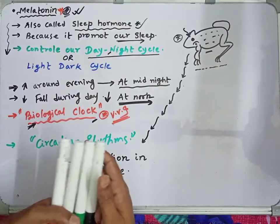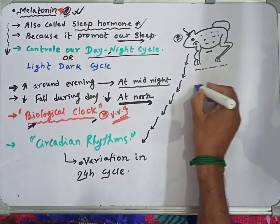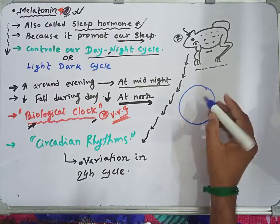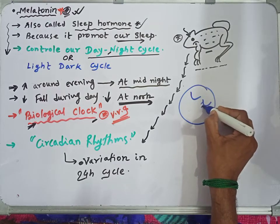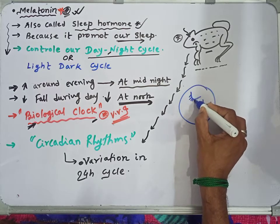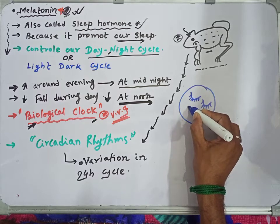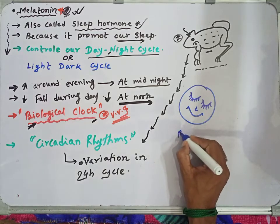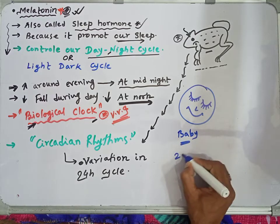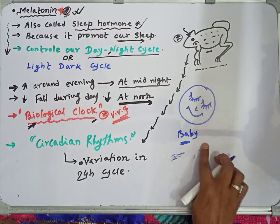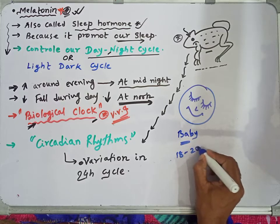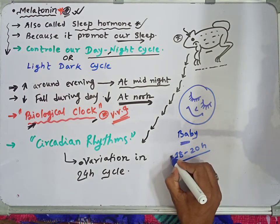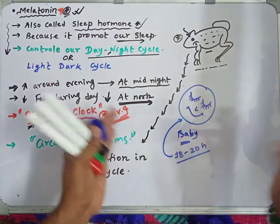Consider a newborn baby — it sleeps for 18 to 20 hours a day. Why does this happen? Because in a newborn baby's body, the melatonin level stays high, so the sleep level remains high.